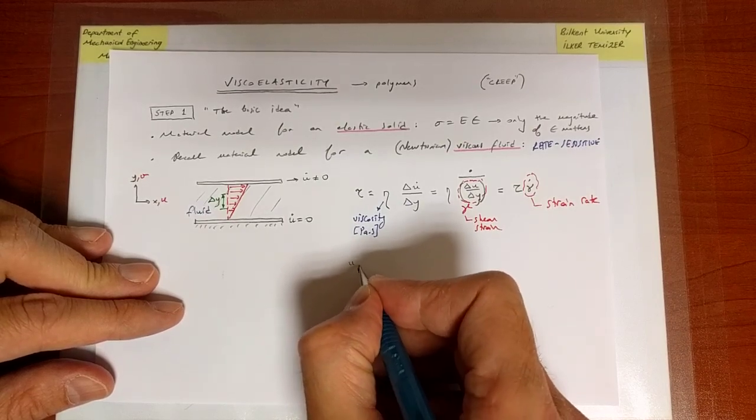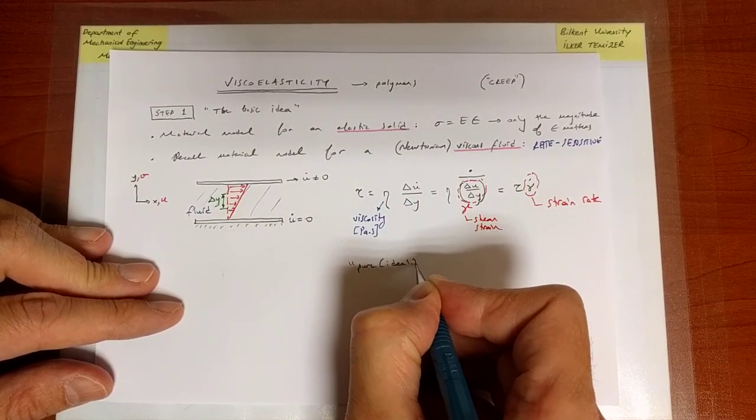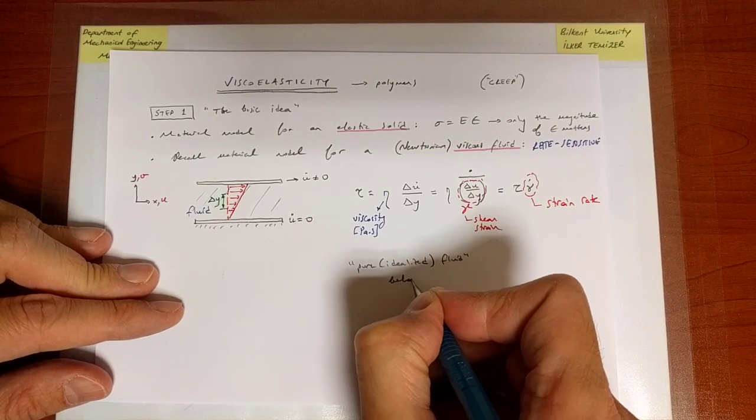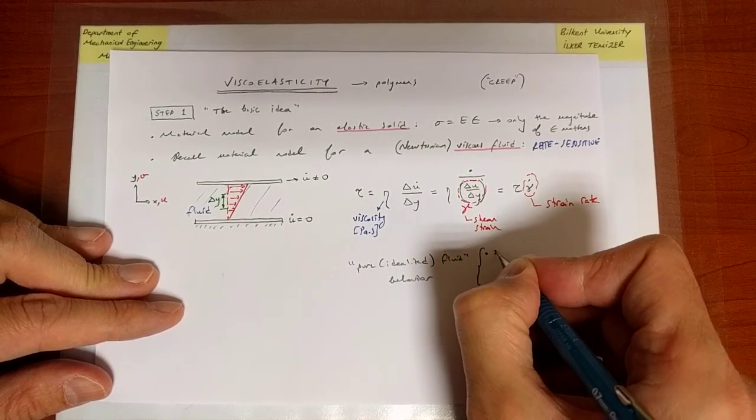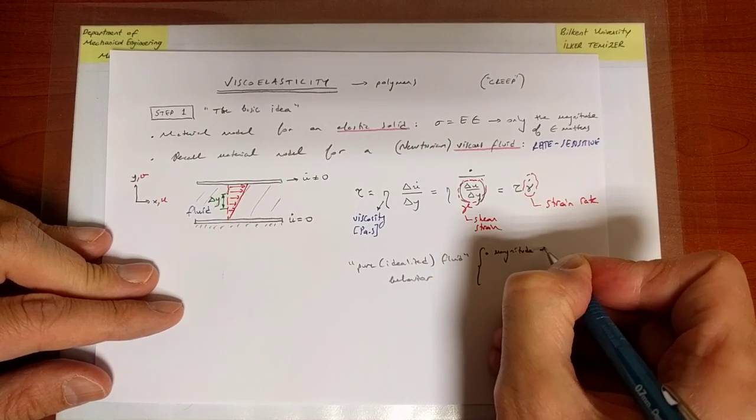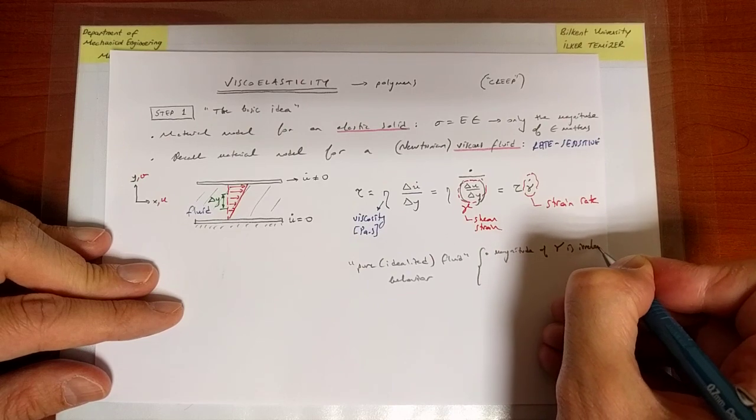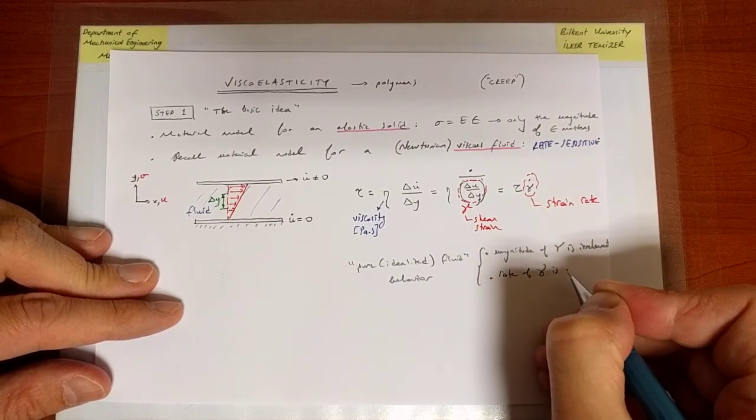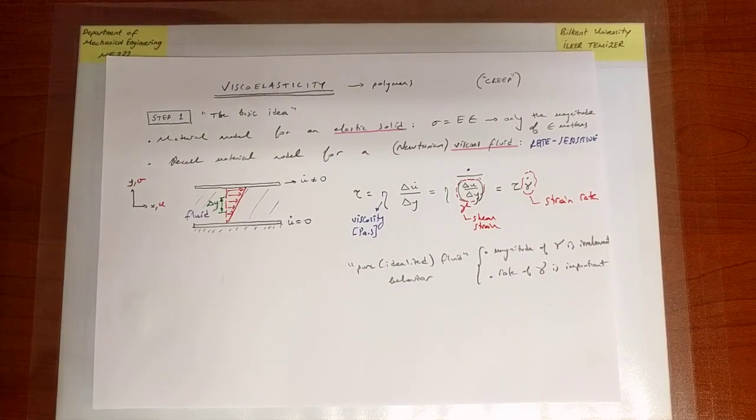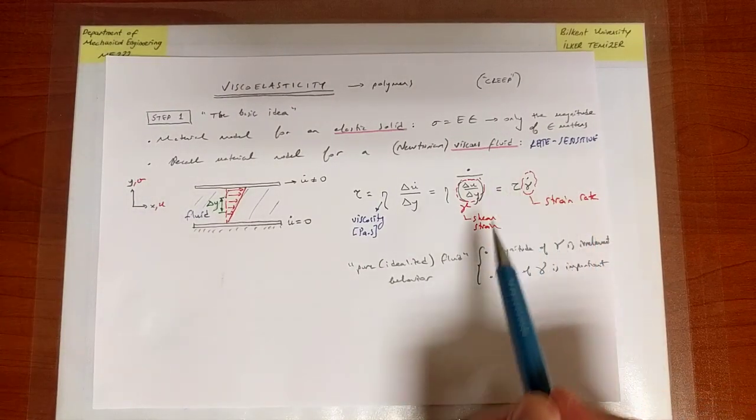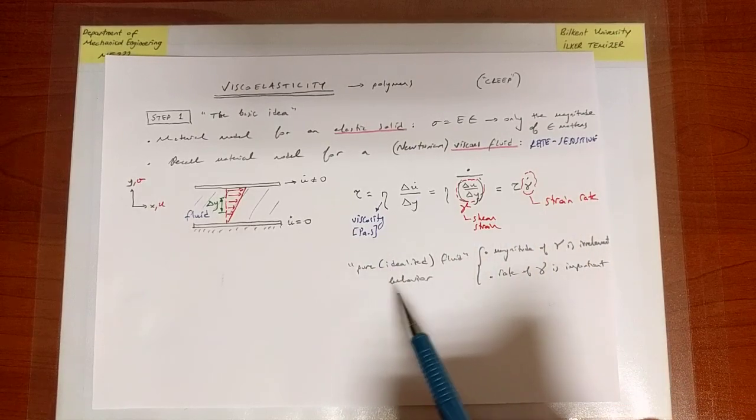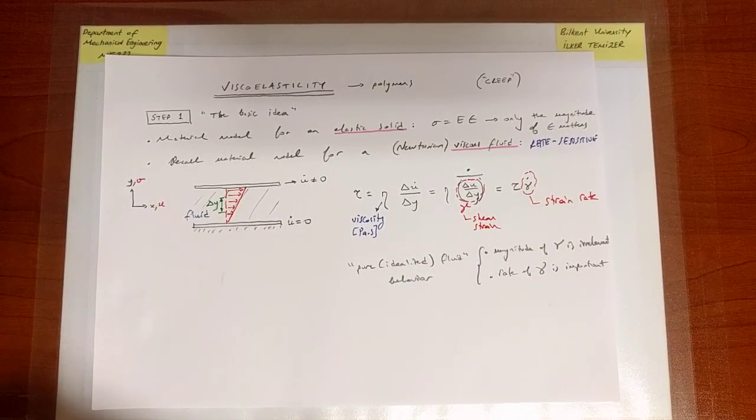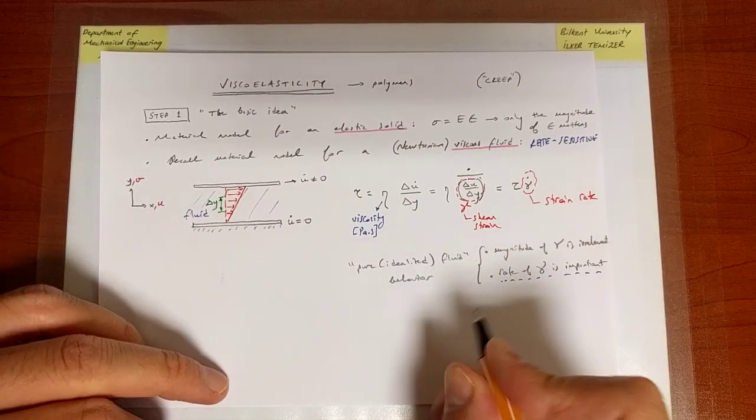So whereas a pure elastic solid behavior is as such, I will say a pure or idealized fluid behavior is one where the magnitude of gamma is irrelevant, but the rate of gamma is important. So this type of rate sensitivity, this is what we call a material that is rate sensitive. It is sensitive to the rate at which you deform it. So that is the definition of rate sensitivity.